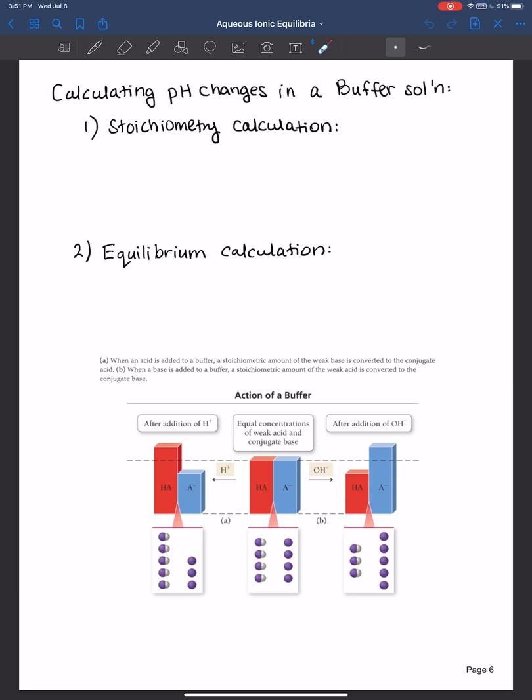In my previous videos we have discussed a buffer needs a weak acid and its conjugate base, or alternatively you can say weak base and its conjugate acid. The purpose of a buffer is to neutralize any added acid or base.